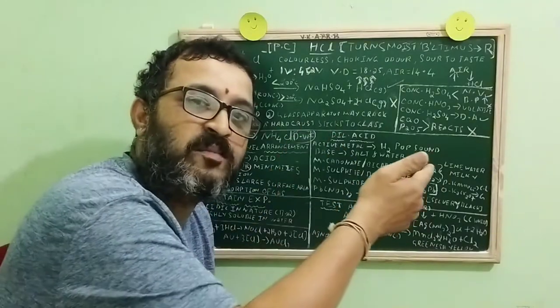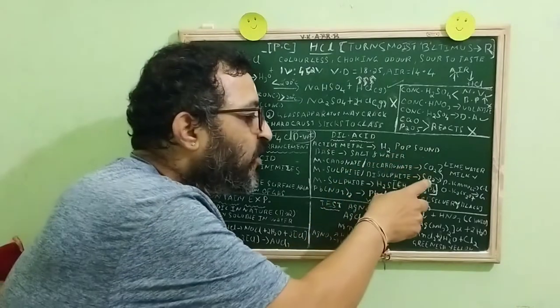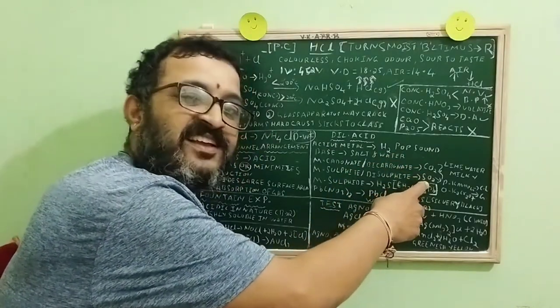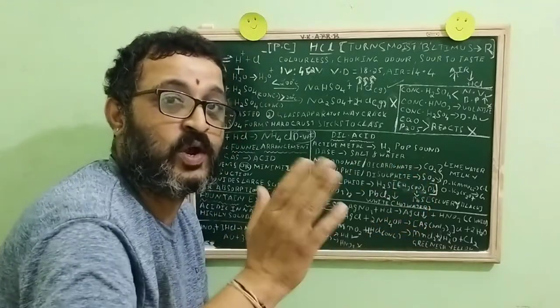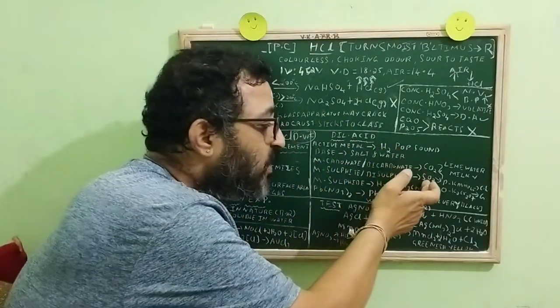With metal sulphides and bisulphides, you will get one more gas that also turns lime water milky. Which one is that? Yes, sulphur dioxide. And, will you get only sulphur dioxide? No, salt, water and sulphur dioxide.